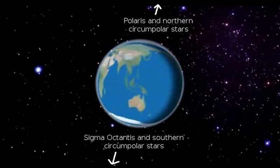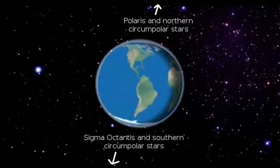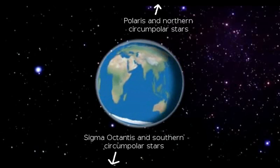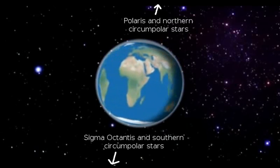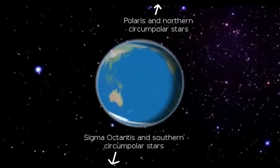Depending on how far north or south you are, some stars stay above the horizon all night long. These are called circumpolar stars, but they are completely different stars in the north and in the south.